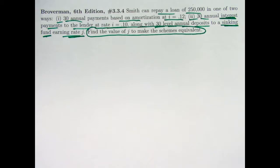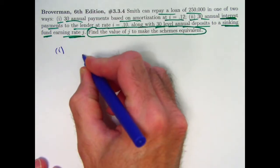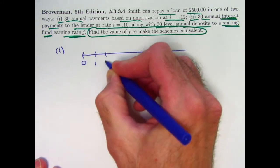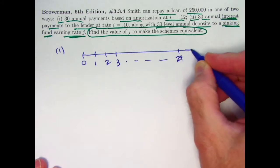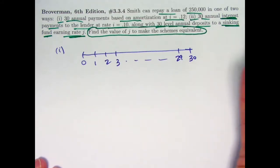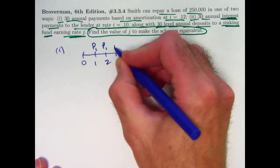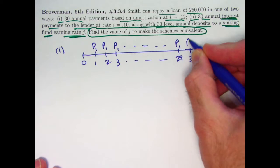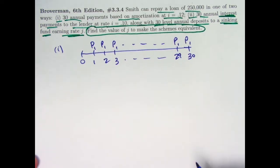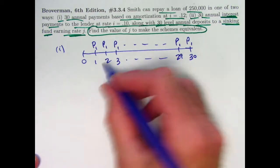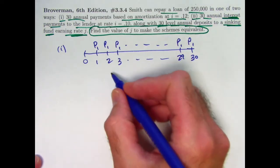Alright, so it's probably best to start with option 1 and think about what's going to go on here. So with option 1, your timeline goes up through time 30. These are years. Your payments are unknown at the moment. Let's call the unknown payment P1. I'm going to have to find P1 probably to help us solve the problem. And these are going to pay off the loan. The present value of all these payments at time 0 has to be the loan amount 250,000.